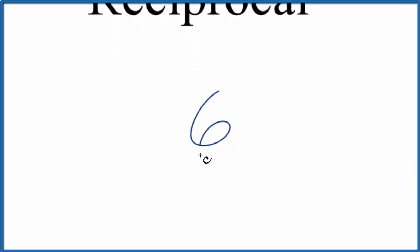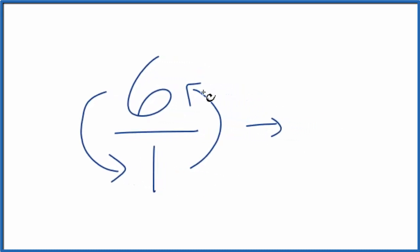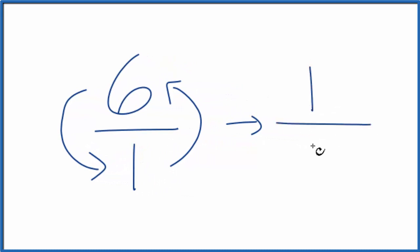If we think of 6 as 6 over 1, really 6 divided by 1, it's just 6. But now when we take the reciprocal, we flip the numerator and denominator. The numerator goes down here, denominator goes up here, and we end up with 1 on top and 6 on the bottom. So the reciprocal for the number 6 is 1 over 6.